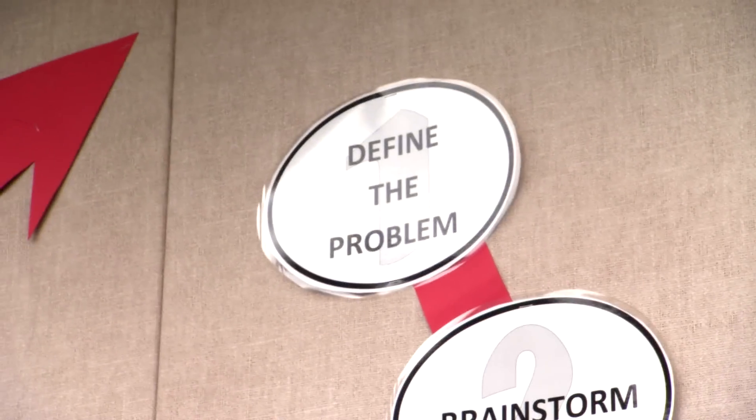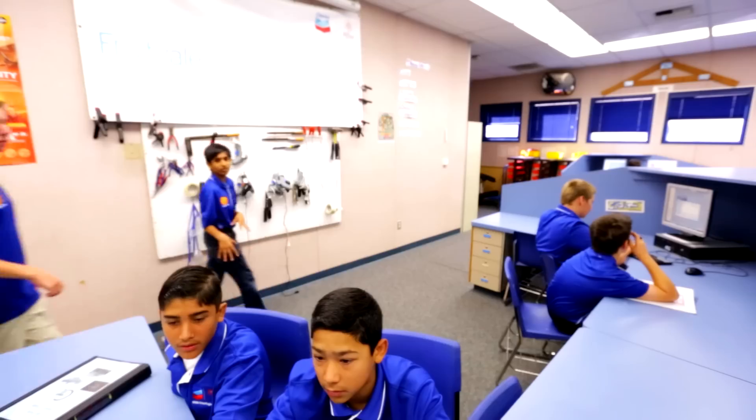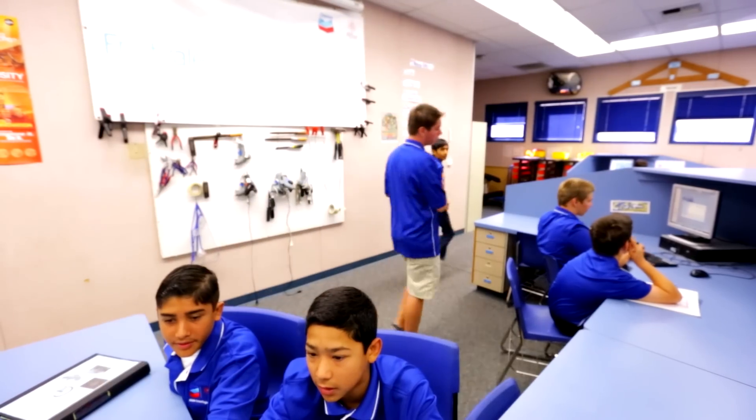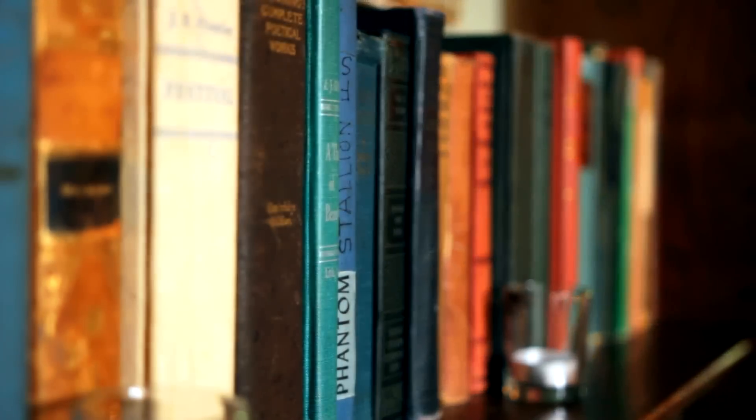The engineering design process is a way for engineers to solve problems. The first step is to define the problem. Brainstorm with a group or with friends. After you've done all your research, you start pulling it together.